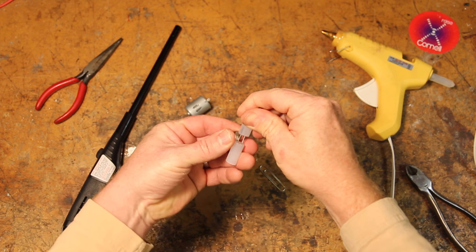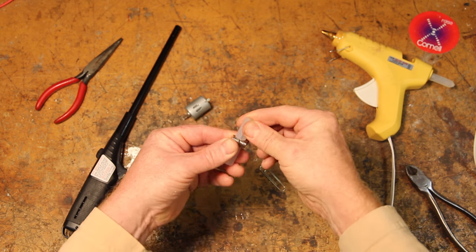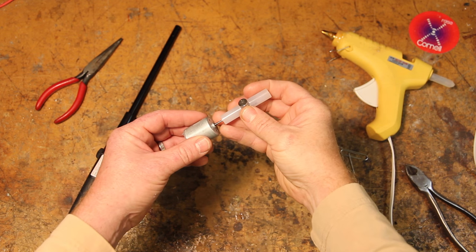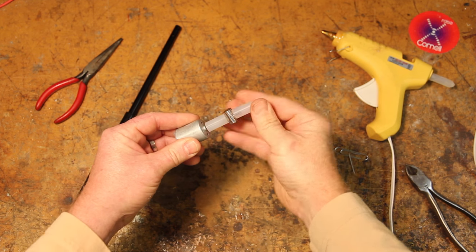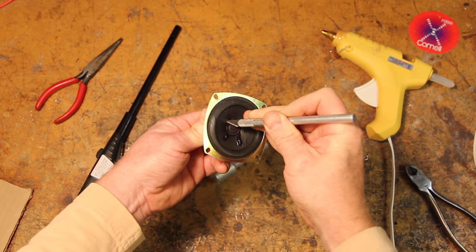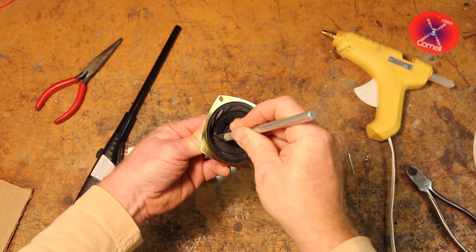Then you can poke the shaft of a hobby motor into the hole that you drilled. Next, you're going to cut out the coil of an old discarded speaker. Make sure you don't accidentally cut the wires—you'll need those.